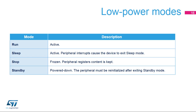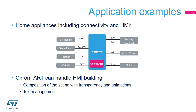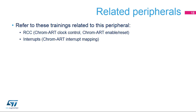In standby mode, the Chrom-ART Accelerator is powered down and must be reinitialized afterwards. It is widely used in any graphical application to compute the frame buffer without any CPU load and with a very efficient throughput. It can compose the whole scene with transparency and facilitate the management of animations. Text rendering is also accelerated, making it easy and efficient to manage anti-aliased fonts. You can refer to the trainings related to the RCC and interrupts for additional information.